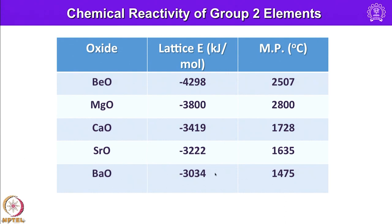Barium oxide, with a lattice energy of 3034 kJ/mol, shows the lowest melting point among alkaline earth metal oxides at 1475 degrees centigrade. The sulphides of group 2 elements also adopt the rock salt structure and have applications as phosphors. Beryllium sulphide adopts the zinc blende structure.